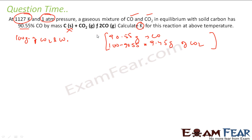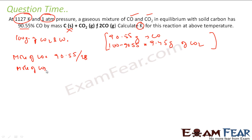Grams alone aren't useful; we need moles. Moles of CO = 90.55 divided by the molecular weight of CO (28), giving 3.23 moles. Moles of CO₂ = 9.45 grams divided by molecular weight 44, giving 0.22 moles.